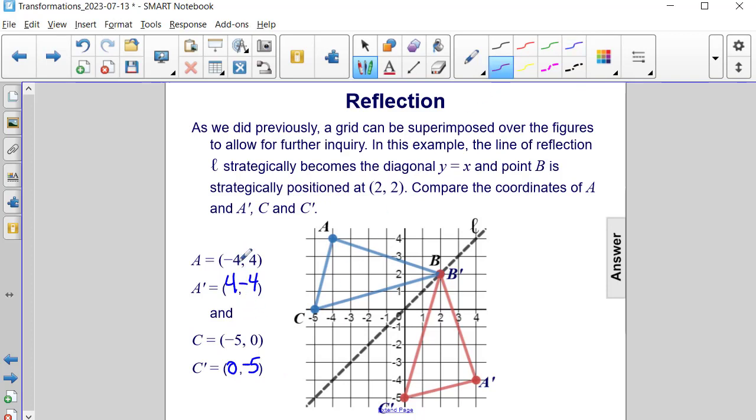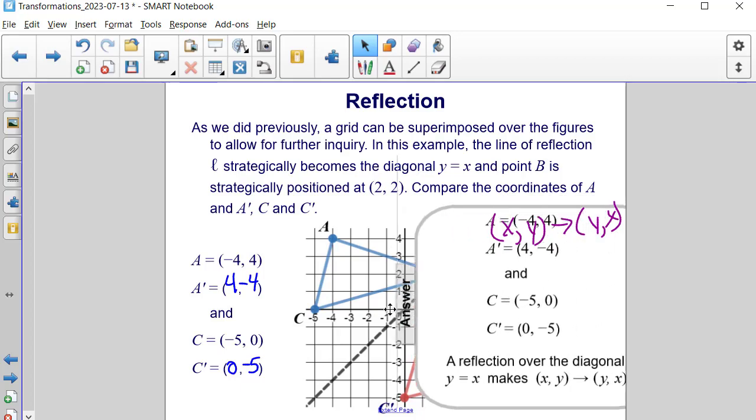As we compare these coordinates from A to A prime and C to C prime, it looks like the X and Y coordinates switched positions, which is exactly what happened. So, in other words, we went from the coordinates (X, Y) to the coordinates (Y, X). And this will always happen whenever you are reflecting about the line Y equals X.